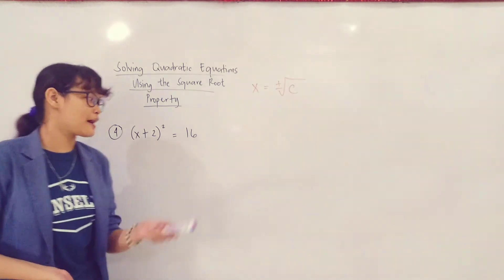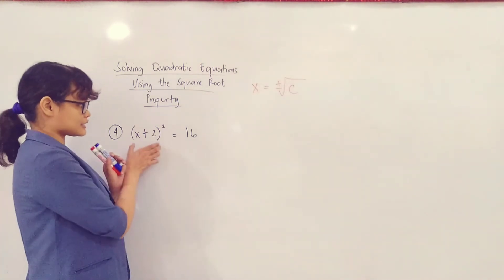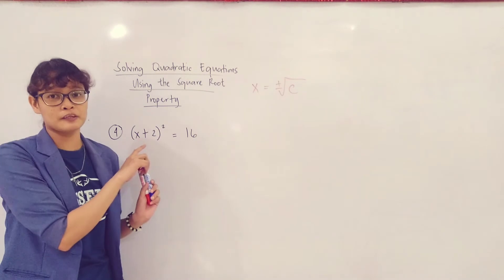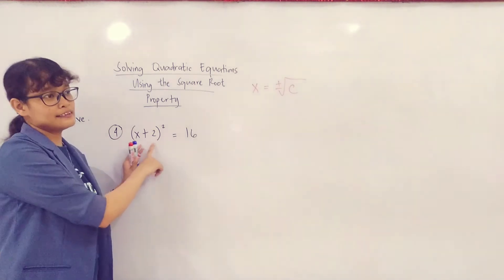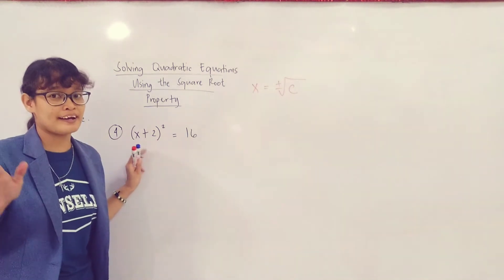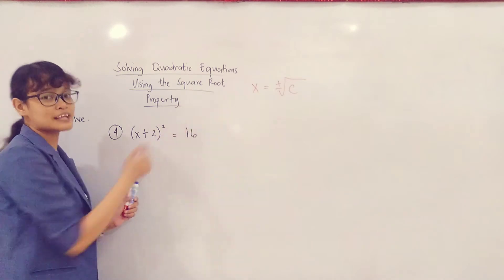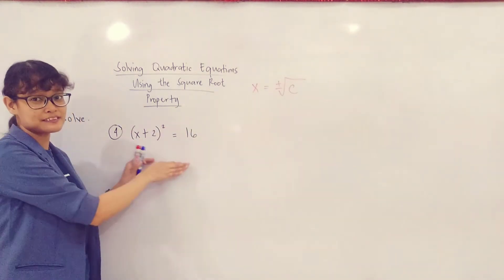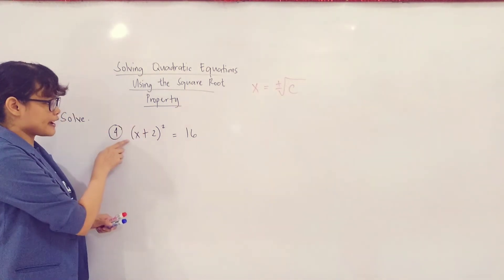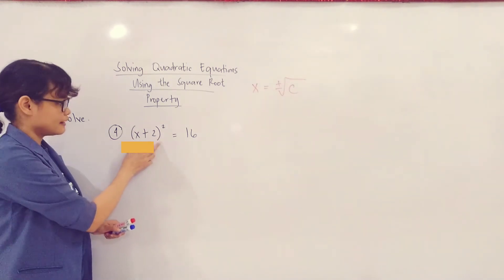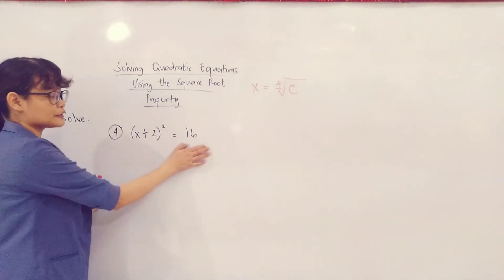Alright, so for our next example, we have the quantity x plus 2 squared equals to 16. Now, you don't have to expand this binomial anymore just because meron siyang exponent na 2. This can be solved using the Square Root Property already — it is just an indication that you are dealing with a quadratic equation. First things first, tignan mo muna kung yung constant number na wala dito sa loob ng parenthesis ay nasa kabilang side na ng equation. For this case, ayos na, nandito na siya sa right side ng equation. Next, tignan mo kung may number before the binomial. Since wala, positive to, we can now proceed to extracting the square roots of both terms.